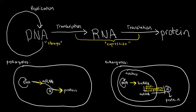Another thing unique to eukaryotes is the act of the mRNA inside the nucleus going out to the cytoplasm and meeting the ribosome, which of course is not possible in prokaryotes because there's no nucleus to exit from. That's a very big difference between eukaryotic and prokaryotic central dogma. Once the mRNA reaches the ribosome, just like in prokaryotes, it will eventually give us the final product, which is the protein.